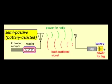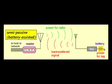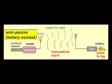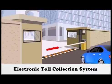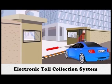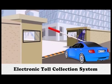Next is semi-passive, also called a battery-assisted passive tag. This uses a battery to run the chip's circuitry but communicates by drawing power from the reader. It is for moderate communication ranges up to 100 meters, like tags for electronic toll collection systems.